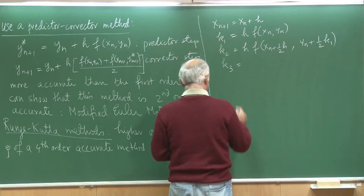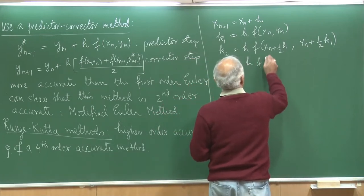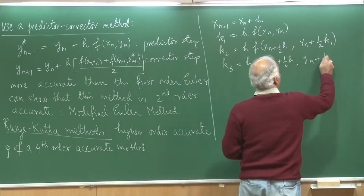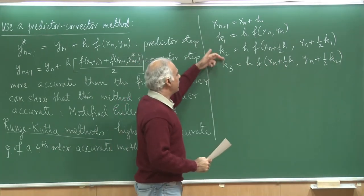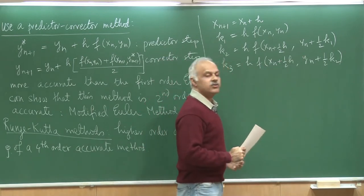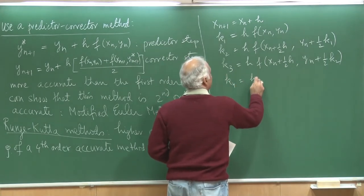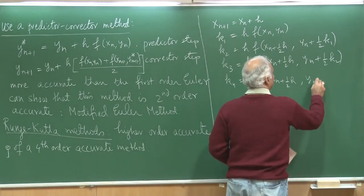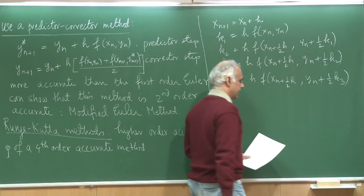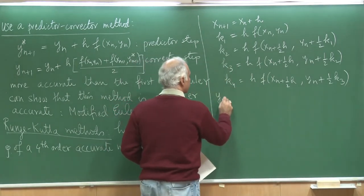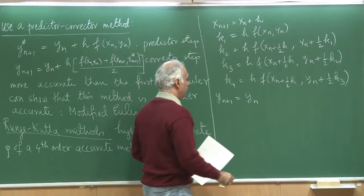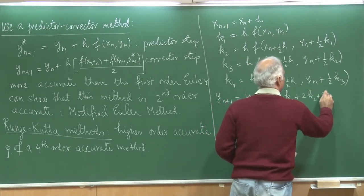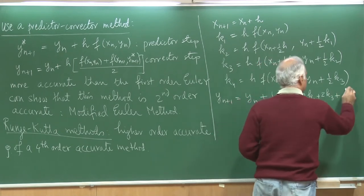Then we can compute k_3, which is h times f of x_n plus half h, and this time we use the value half k_2. So we are using a more modified value of y to calculate the slope. And we also use k_4, which is h times f of x_n plus h and y_n plus half k_3. Now my formula is y_{n+1} = y_n plus one-sixth of k_1 plus twice k_2 plus twice k_3 plus k_4.